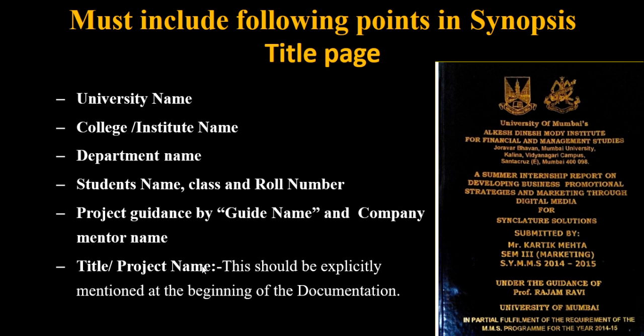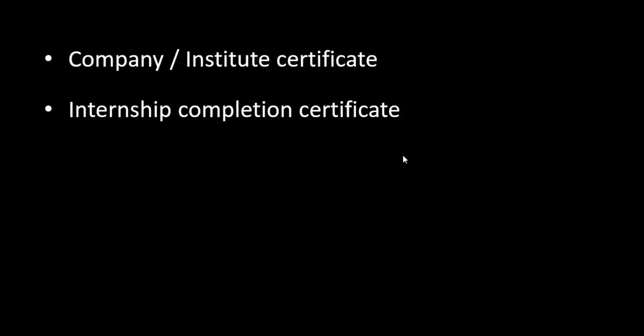Then the project name, and you are submitting this project for which you need to write 'in partial fulfillment of the requirement of your course' for the academic year. Then you need to attach the company or institute certificate for internship documentation and college certificate for academic project. You need to attach the internship completion certificate and abstract also.